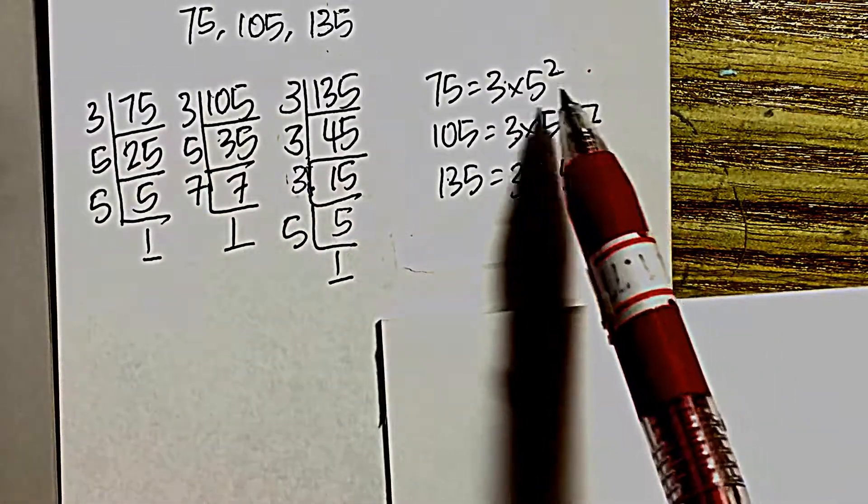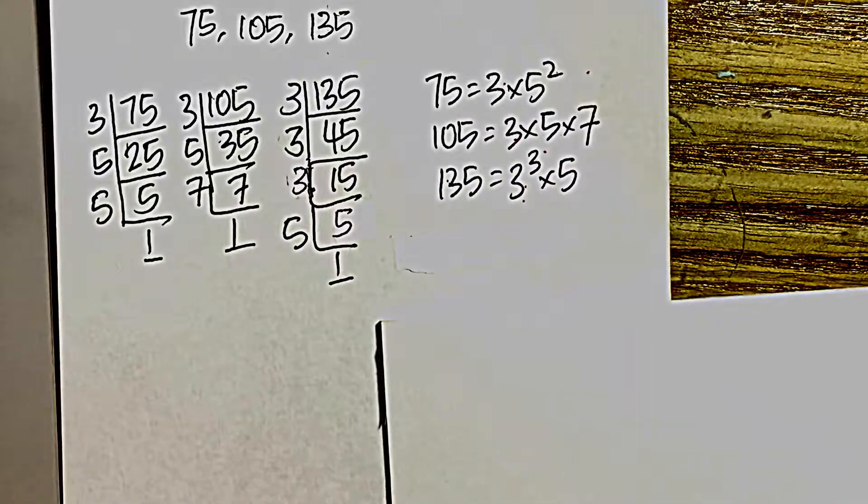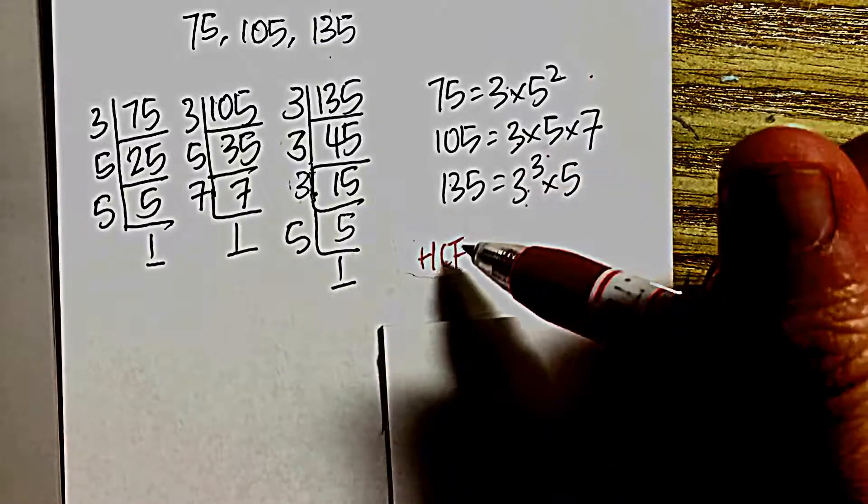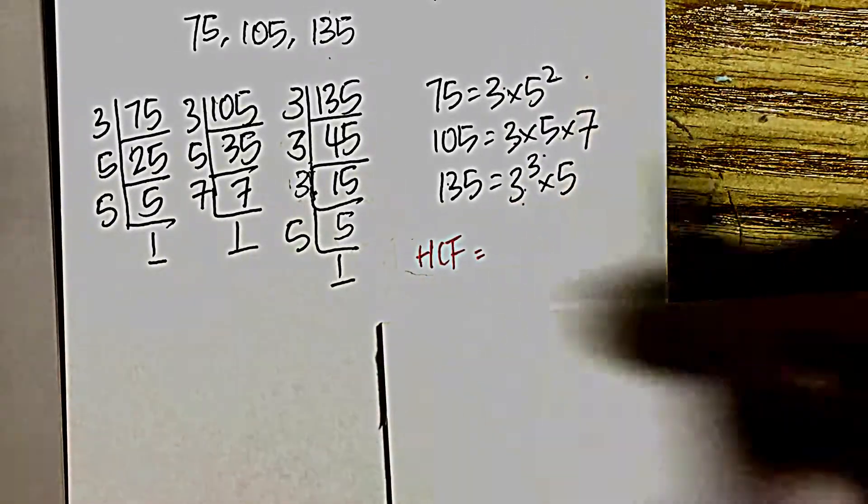Then we express them in index notation. Here, to find the highest common factor, since we want something that is common across all three numbers,